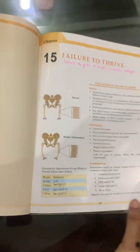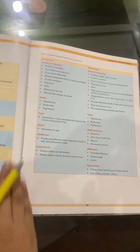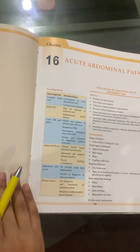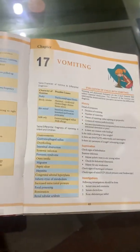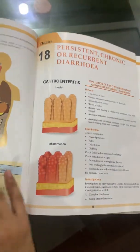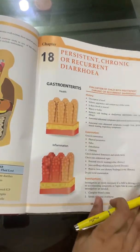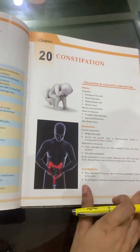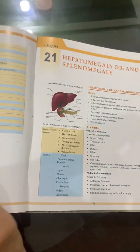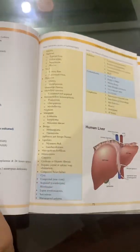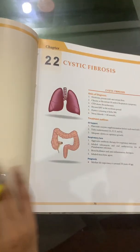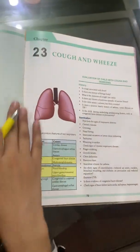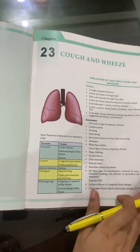Then the Gastroenterology section, Section 3, covers failure to thrive — which is a very common presentation in children — then acute abdominal pain, then vomiting, persistent chronic or recurrent diarrhea, abdominal pain, constipation, hepatomegaly and splenomegaly, and cystic fibrosis. Then comes Section 4 which consists of Pulmonology, and it includes diseases of cough and wheeze in children.